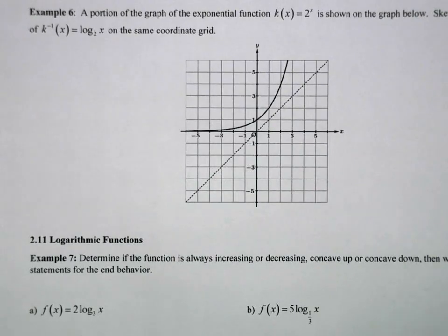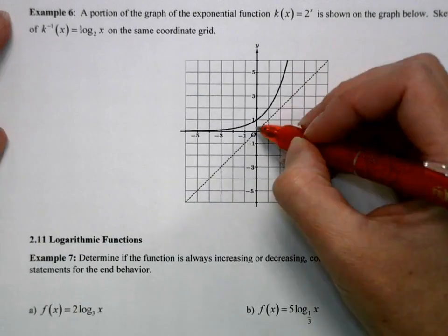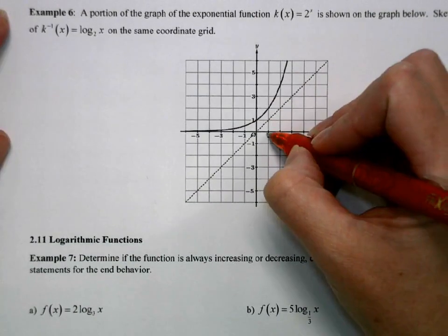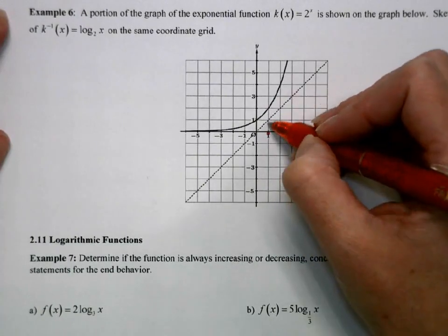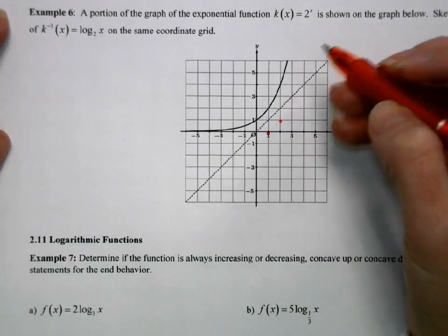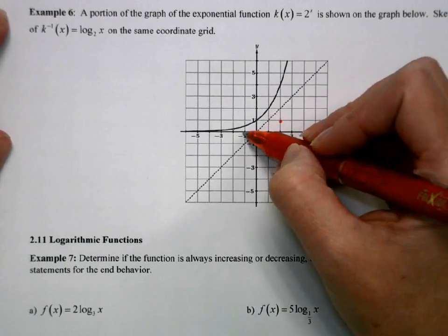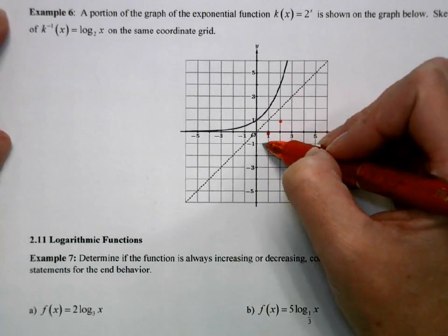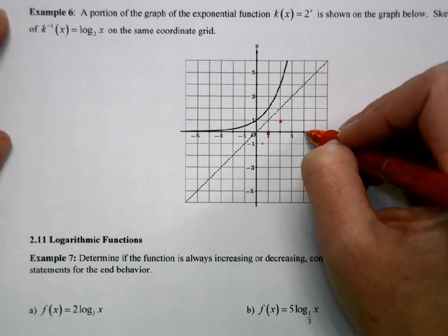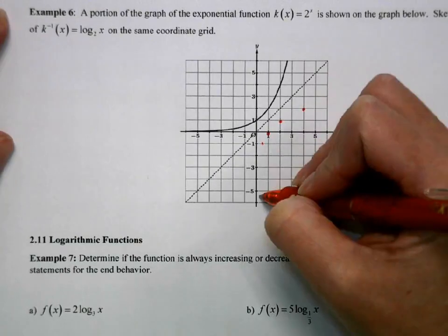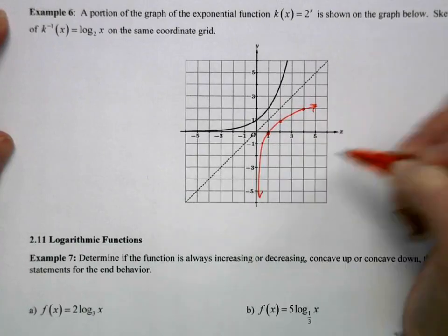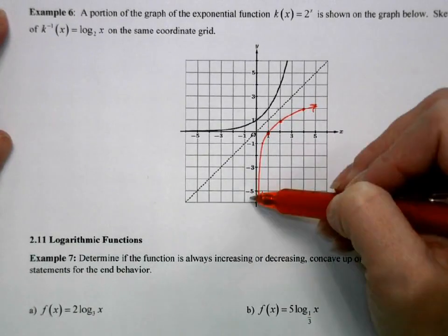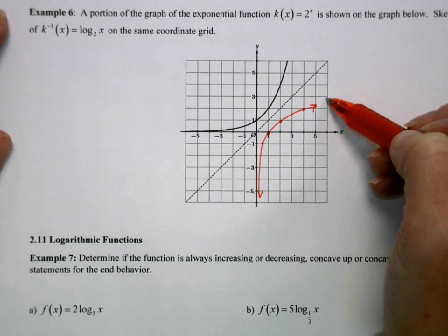Next we're going to graph, we've got 2 to the x, we're going to graph log base 2, which is its inverse. So I'm going to reflect these points over. So instead of 0, 1, we've got a 1, 0. Instead of a 1, 2, we have a 2, 1. Instead of a negative 1, 1 half, we have a 1 half, negative 1. 4 is going to be a 2. So that's what log base 2 is going to look like. And we're going to deal with the graphs of logs here in a minute.